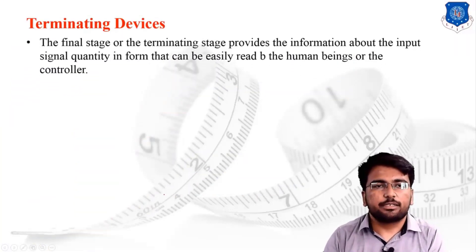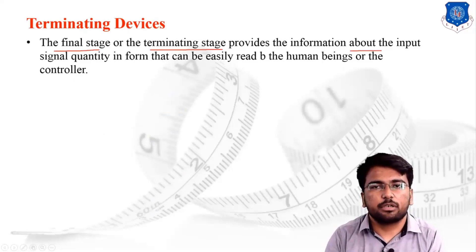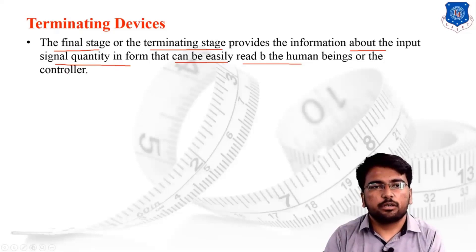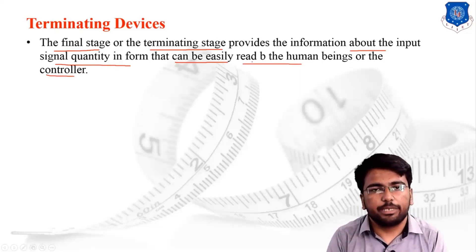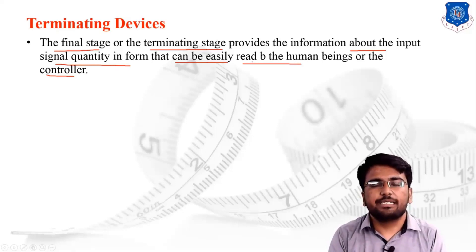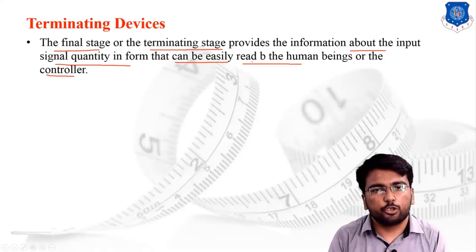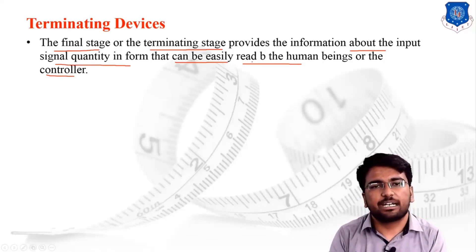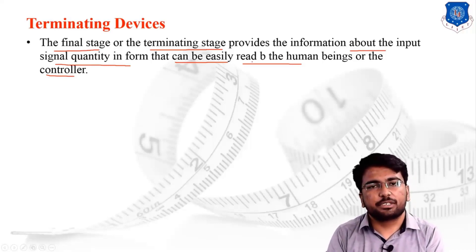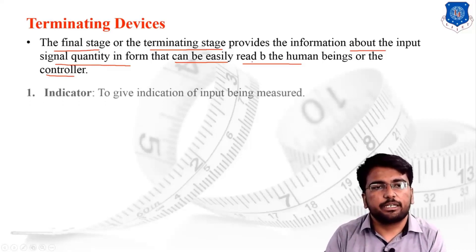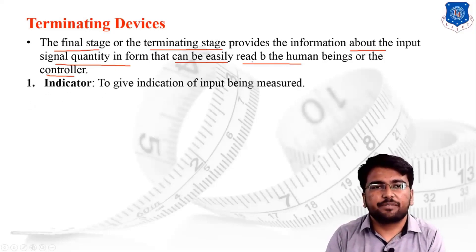So, what are terminating devices? The final stage, or terminating stage, provides information about the input signal quantity in a form that can be easily read by human beings or a controller. The basic aim of the terminating device is to provide information collected from the input signal in an accessible form. The terminating device, which is the second stage of the measuring system, is classified into three different categories: the indicator, the recorder, and the controller.